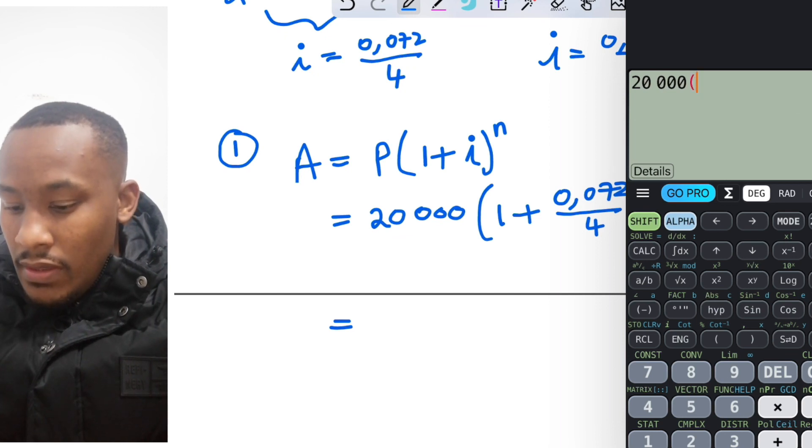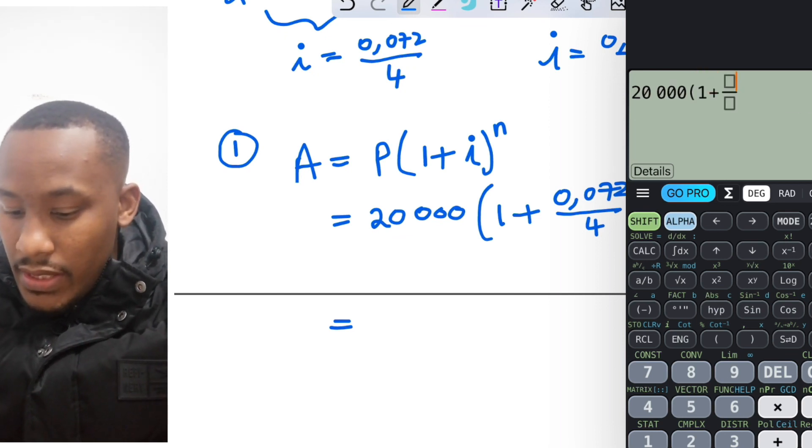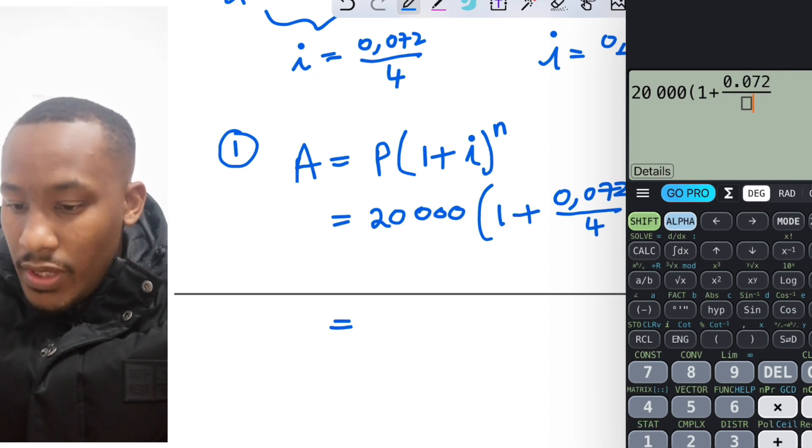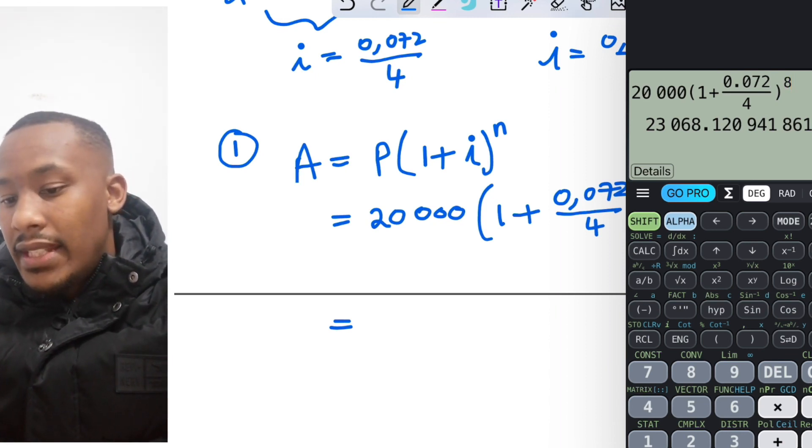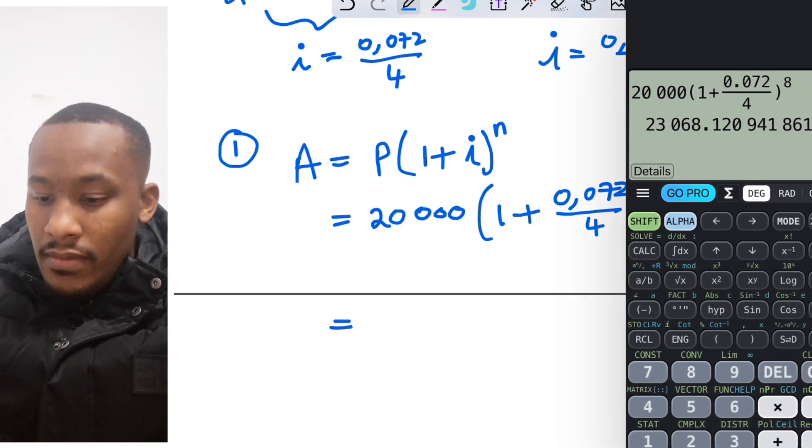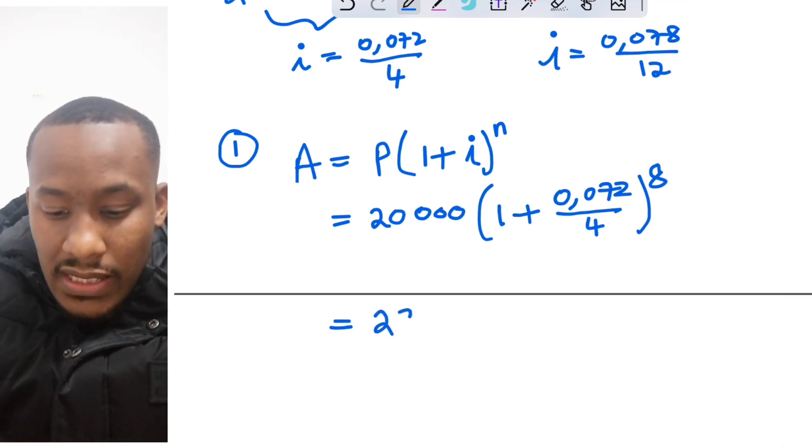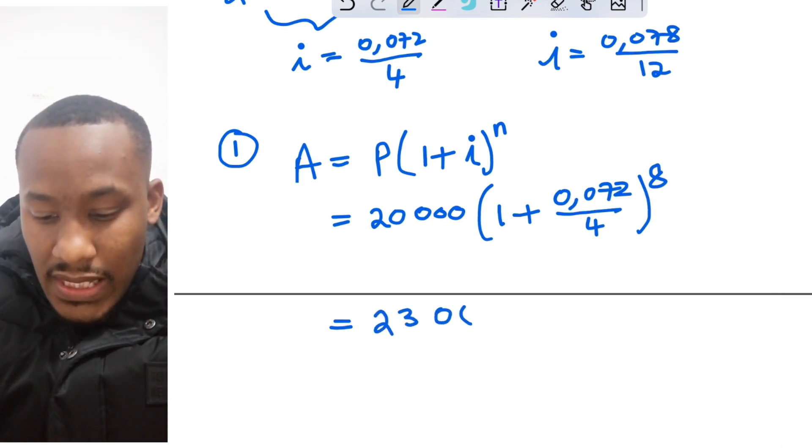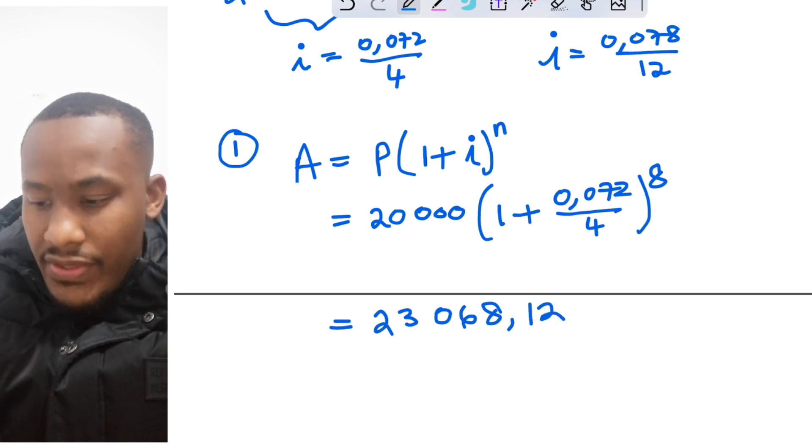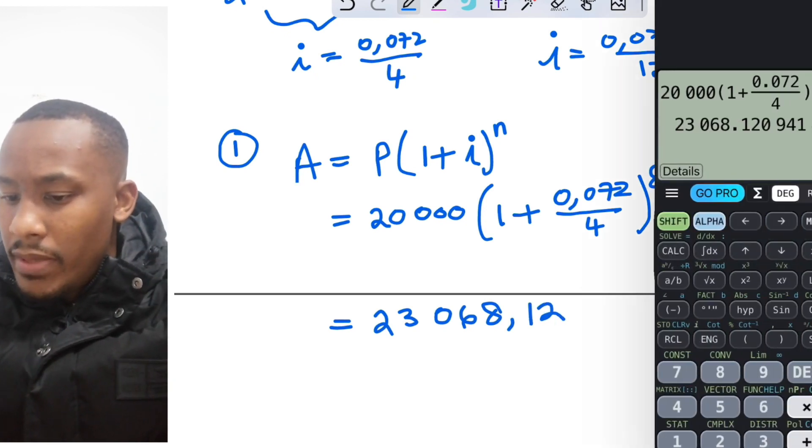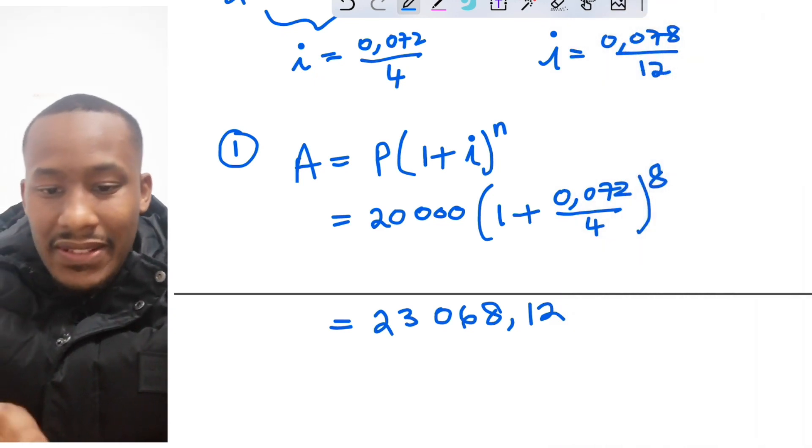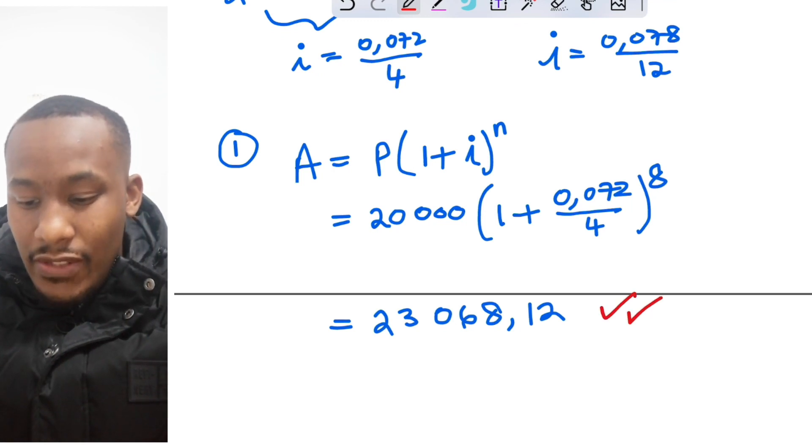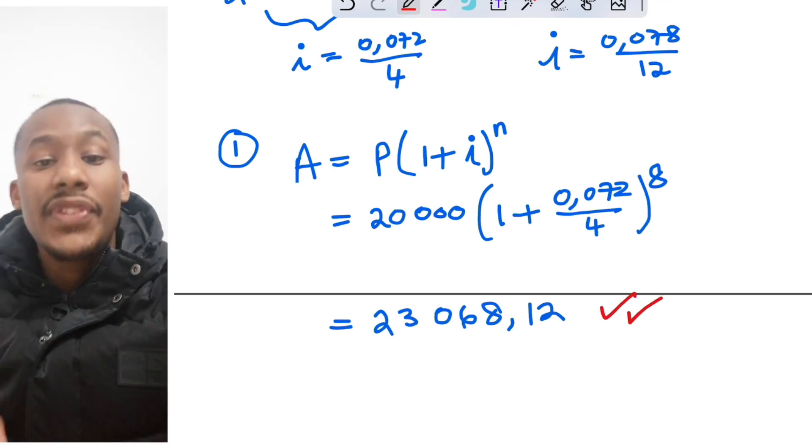Let's punch this into our calculator and work out the value for that. 20,000 times 1 plus, interest rate 0.072 divided by 4, to the power of 8 equals 23,068.12 cents. So there you go, this is your answer, well at least for the first question.